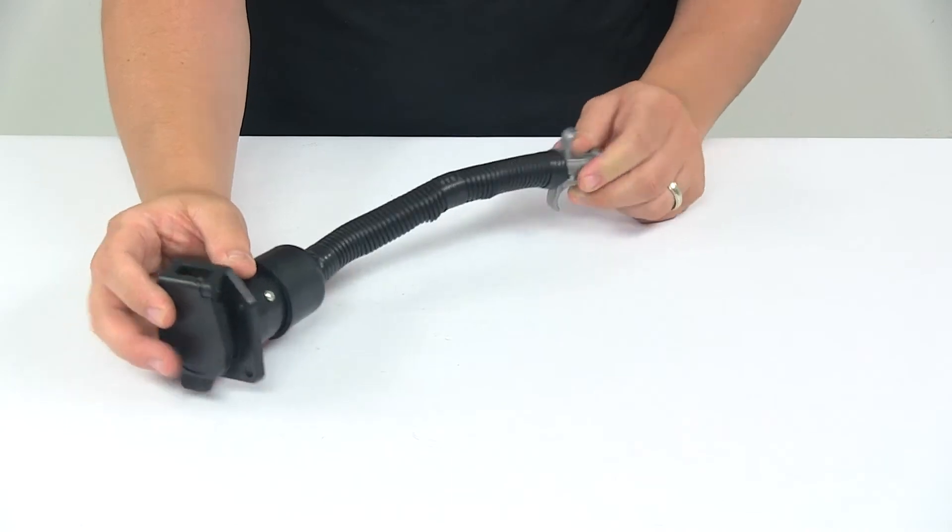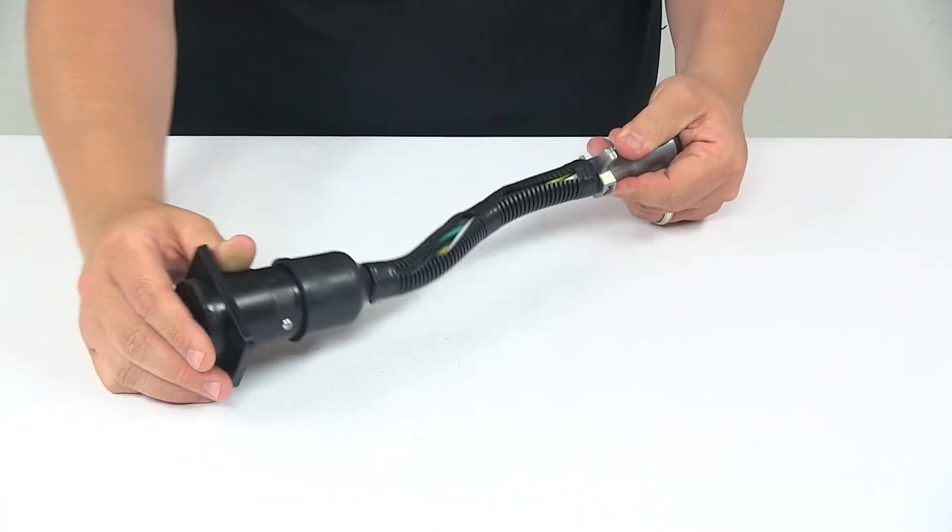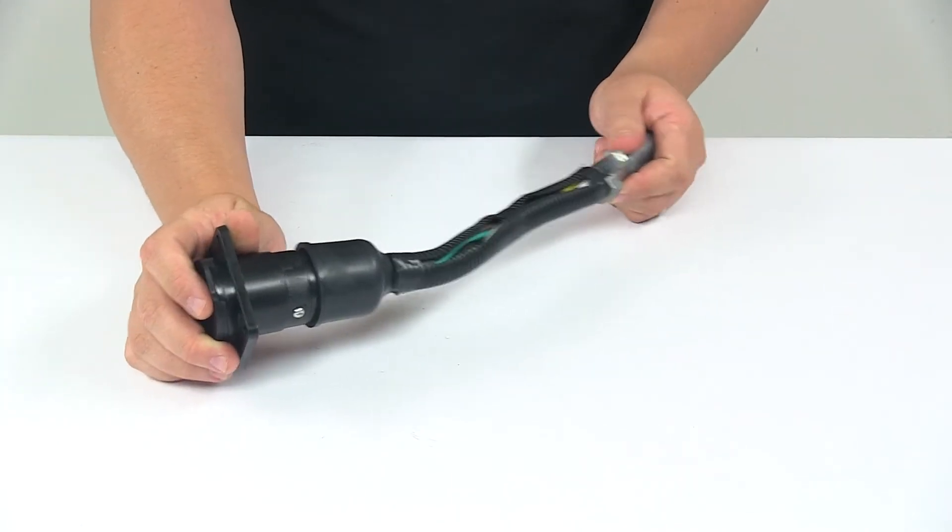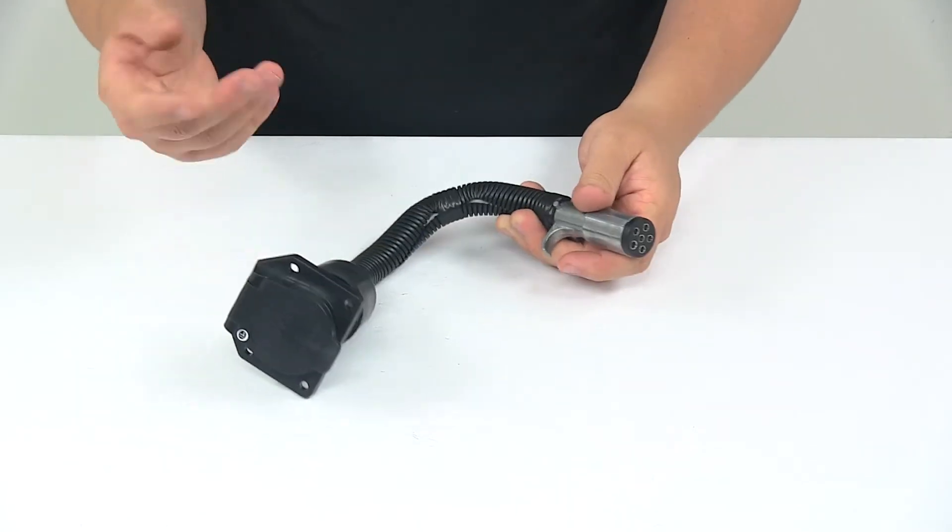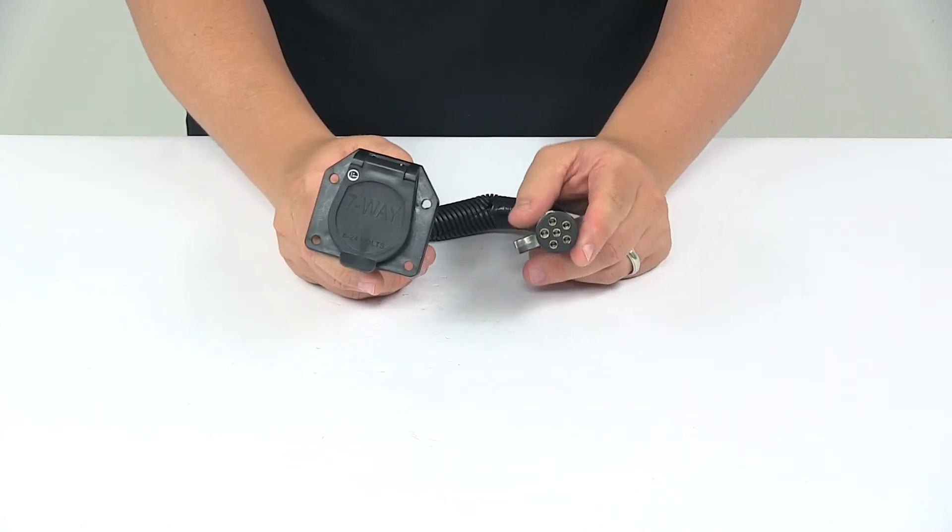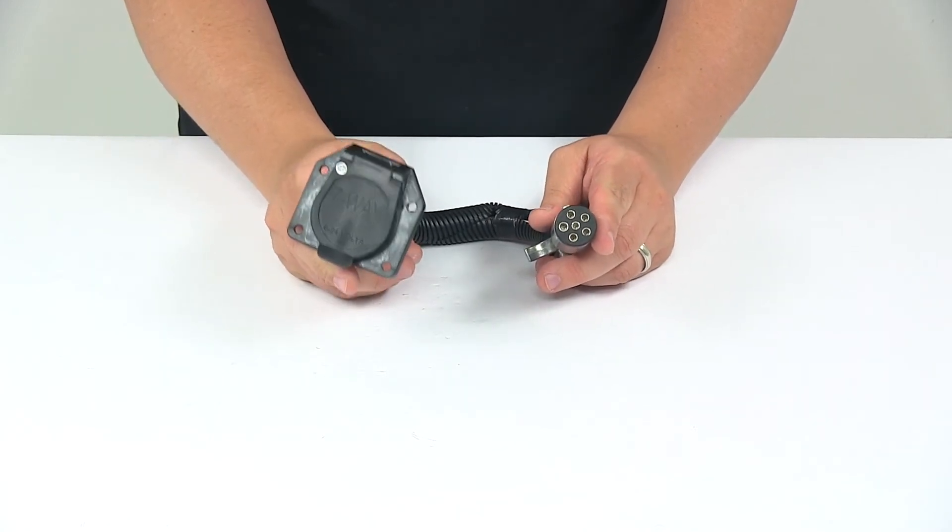In between the connectors, we have the eight-inch flexible wire loom which helps protect the wiring from damage and wear. This basically converts your vehicle's six-way round connector to a seven-way connector.